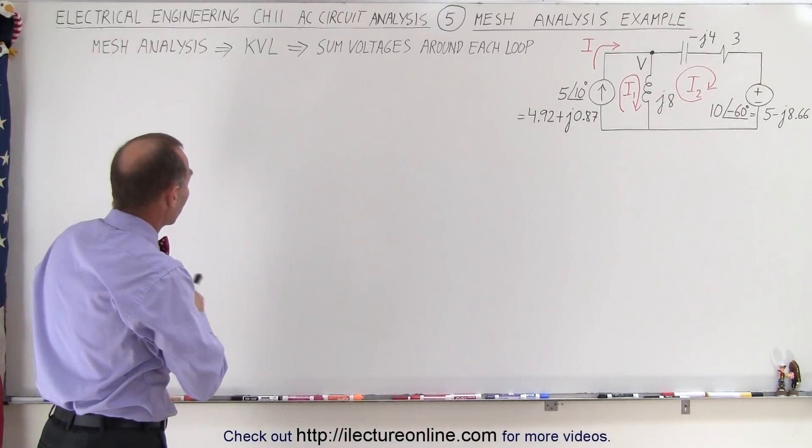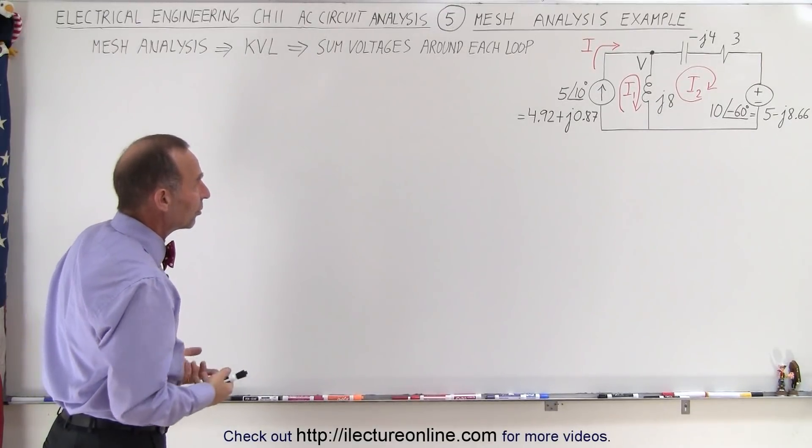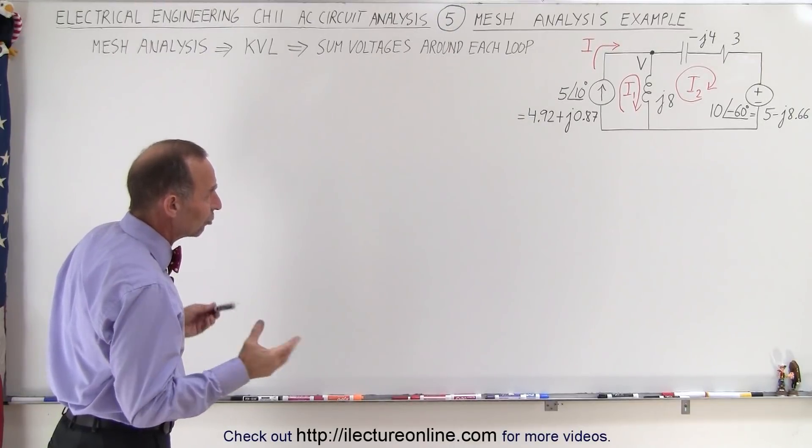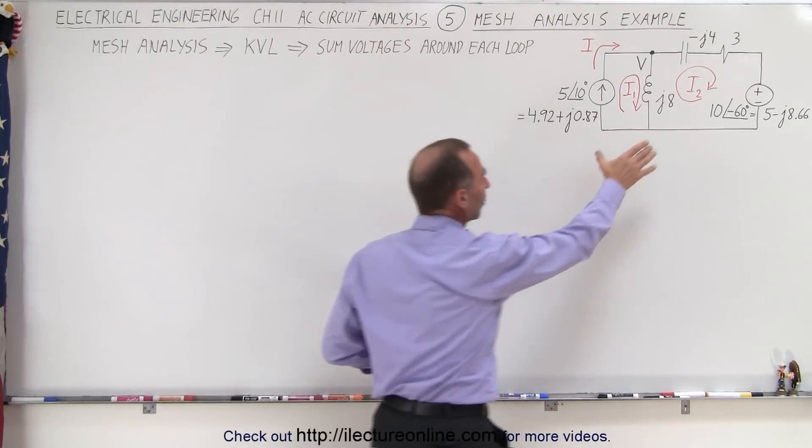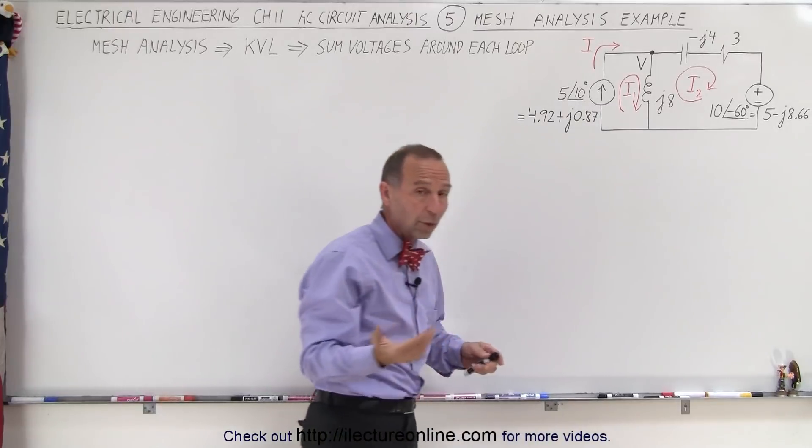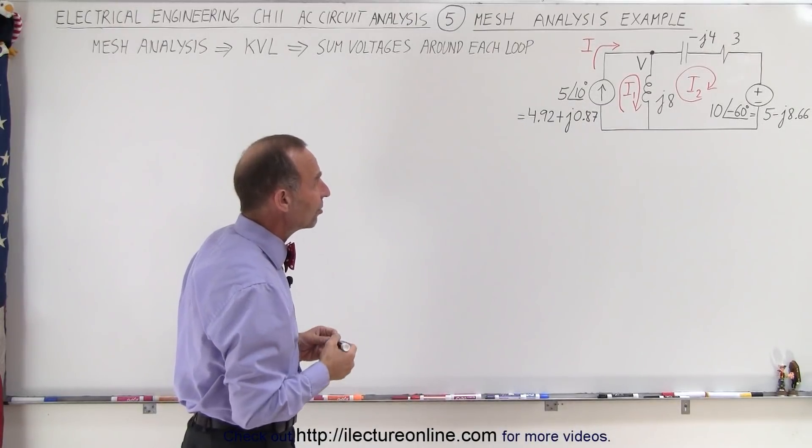So we use what we call Kirchhoff's voltage loop analysis method where we simply add up all the voltages around each loop. We have two unknowns I1 and I2. We're going to end up with two equations because we have two meshes. We solve them simultaneously.